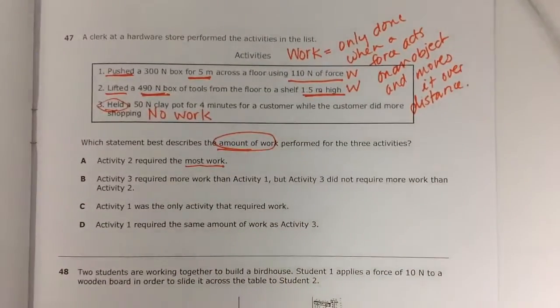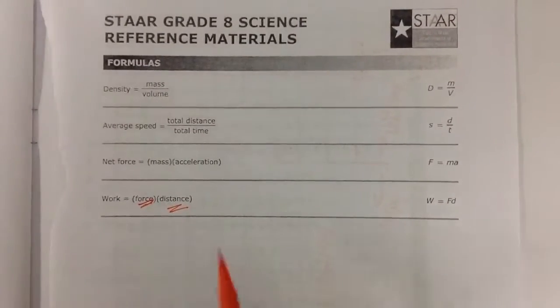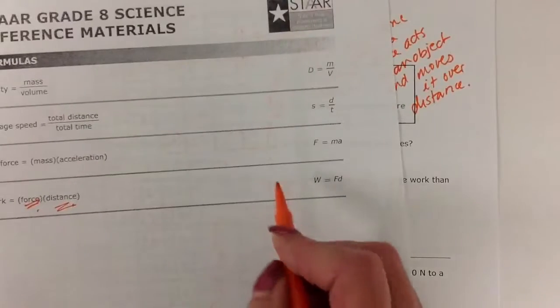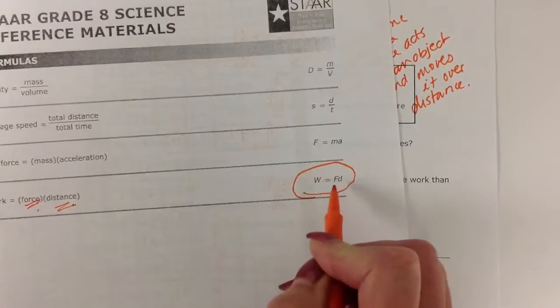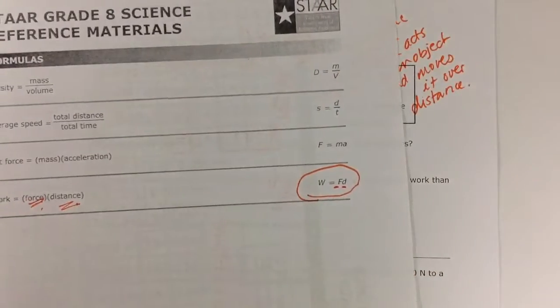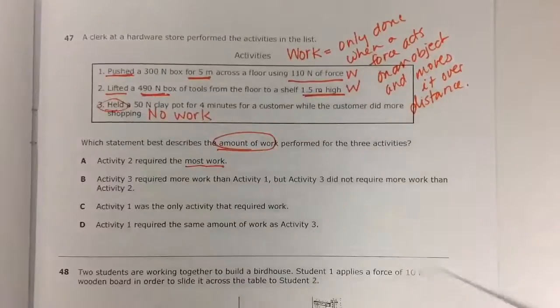Let's look at our formula chart. Our formula chart tells us that work is equal to force times distance, or work equals a force being applied—push or pull—over the distance that the object is moving.